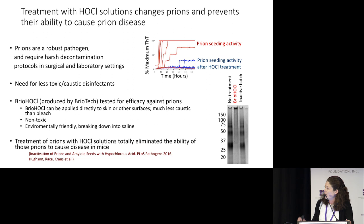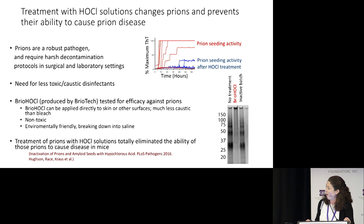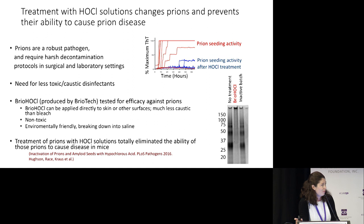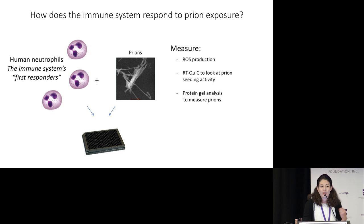Those lines on a gel matrix on the bottom are a general measure of how the prions are assembled. You can see that with no treatment, you have those black lines which are prions. But when they were treated with Brio-HOCl, that assembly of the prions is totally changed, and this correlates to its drop in infectivity in the animals.